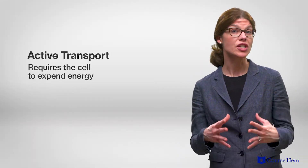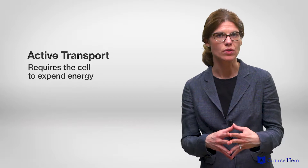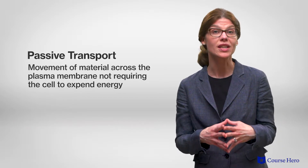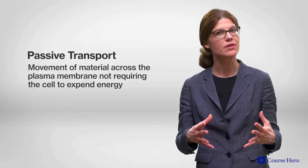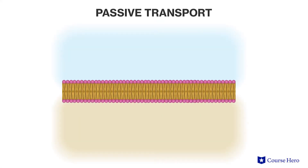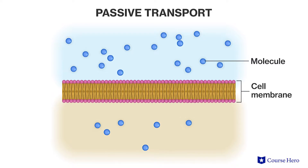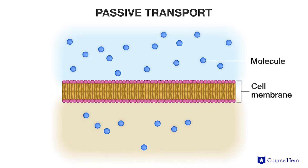The cell uses a number of mechanisms to transport material across the membrane. Some types of transport require the cell to expend energy and are called active transport, whereas other types of transport do not require the use of energy and are called passive transport. Passive transport is the most common way to transport material in and out of a cell, and it occurs as a result of the random movement of molecules — in other words, due to their kinetic energy.